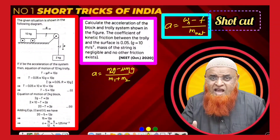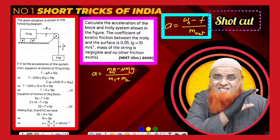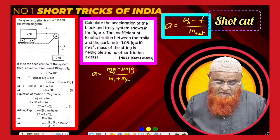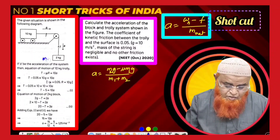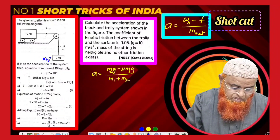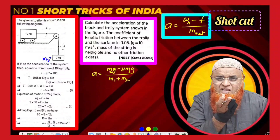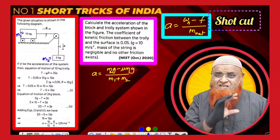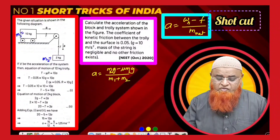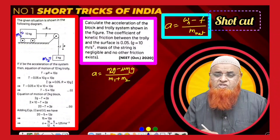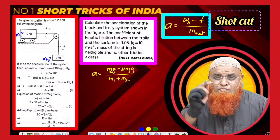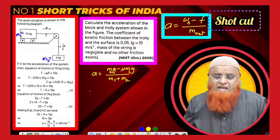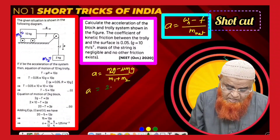The shortcut formula is: acceleration = (weight of hanging body − friction force of body resting on table) / net mass. The hanging body has mass m2 = 2 kg and the body resting on the trolley has mass m1 = 10 kg. So acceleration = (m2·g − μ·m1·g) / (m1 + m2).